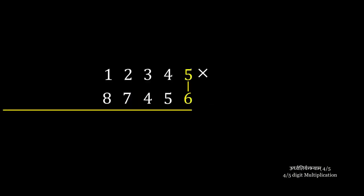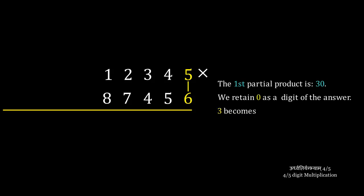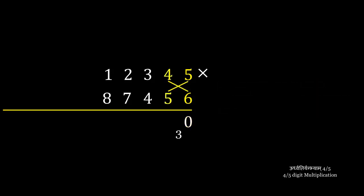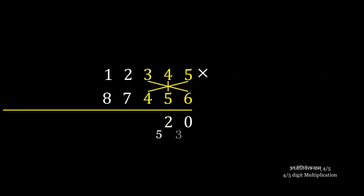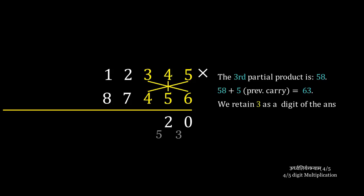The first partial product is 5 times 6, which is 30. We retain 0 and carry 3. The second partial product is a cross-multiplication, which gives us 49. We add the previous carry to get 52. We retain 2 and carry 5. The third partial product is a cross-multiplication of the last three digits, which gives us 58. We add the previous carry and we retain 3 as a digit of the answer and carry 6.